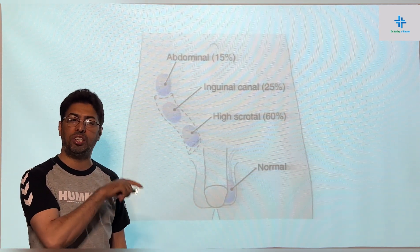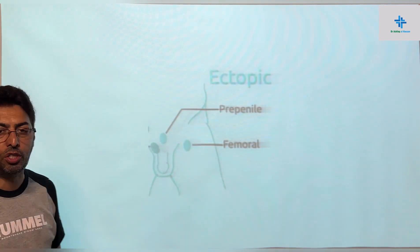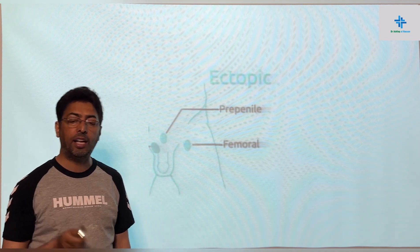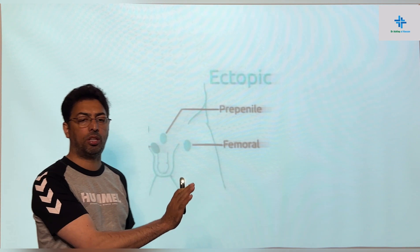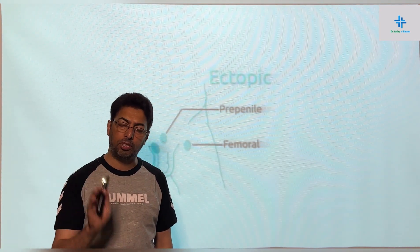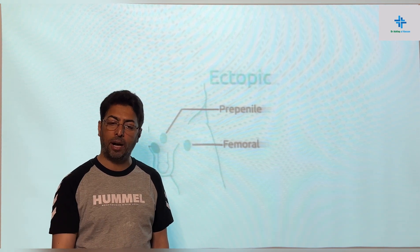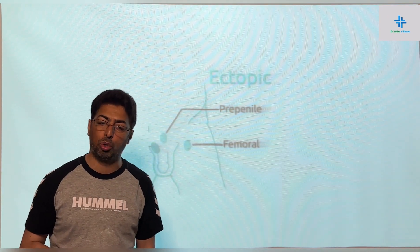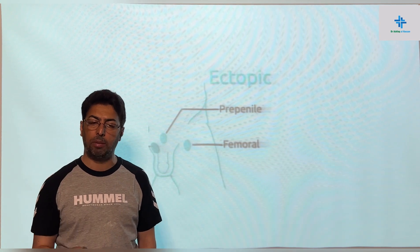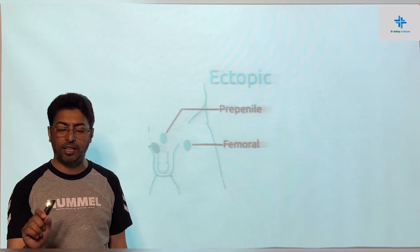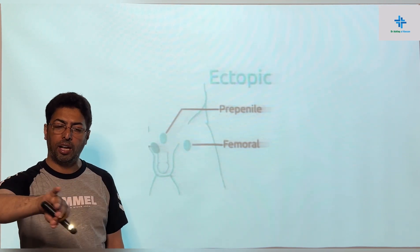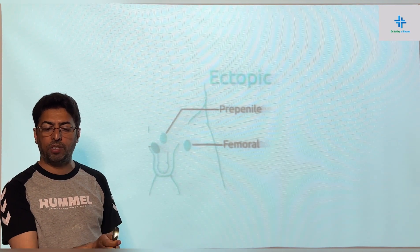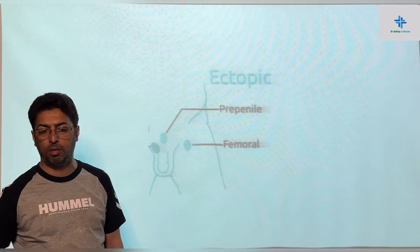Another condition is testicular ectopia, or ectopic testes, which is very different from undescended testes. Here the testes are present outside the normal path of descent — they may be on the thigh, in the femoral region, on the buttock, in the perineum, prepenile, or post-scrotal. The important distinction is that in ectopic testes the testes lie at a path away from the normal path of descent, whereas in undescended testes they remain within that path.